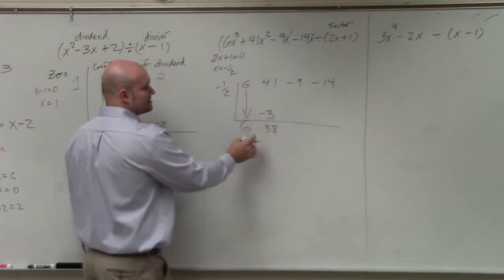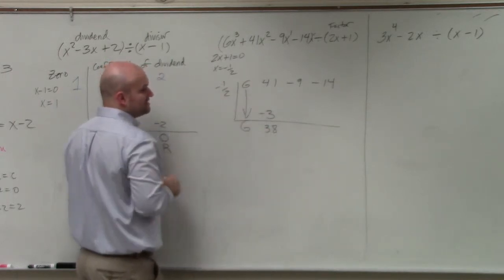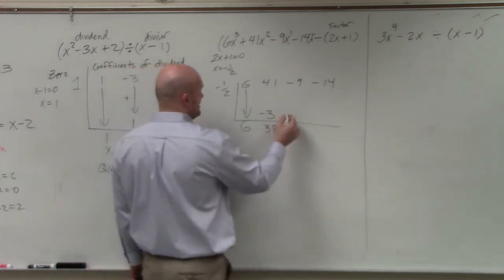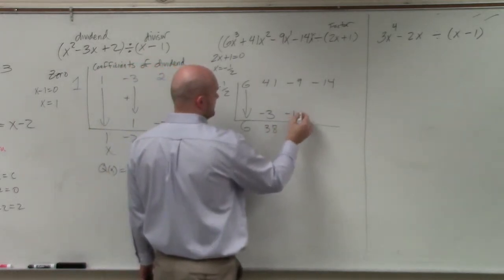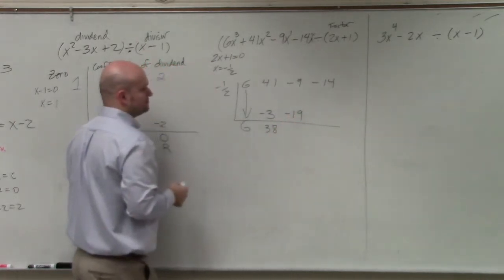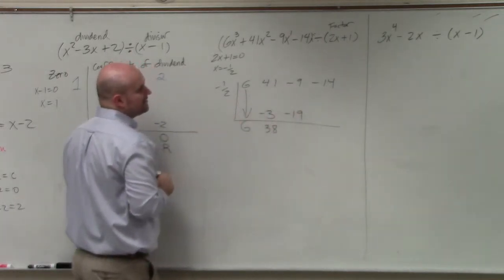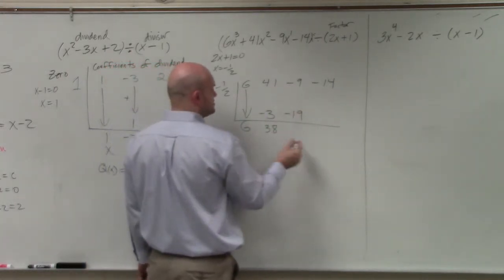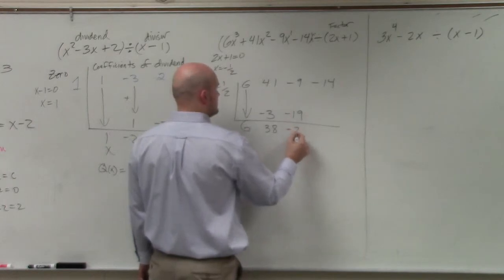Then again, we multiply on the diagonal. 38 times negative 1 half is going to be a negative 19. Negative 19 plus negative 9 is going to be a negative 28.